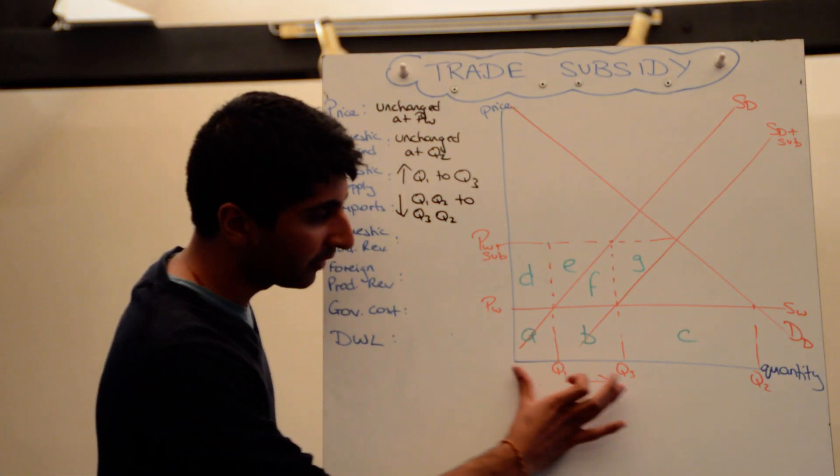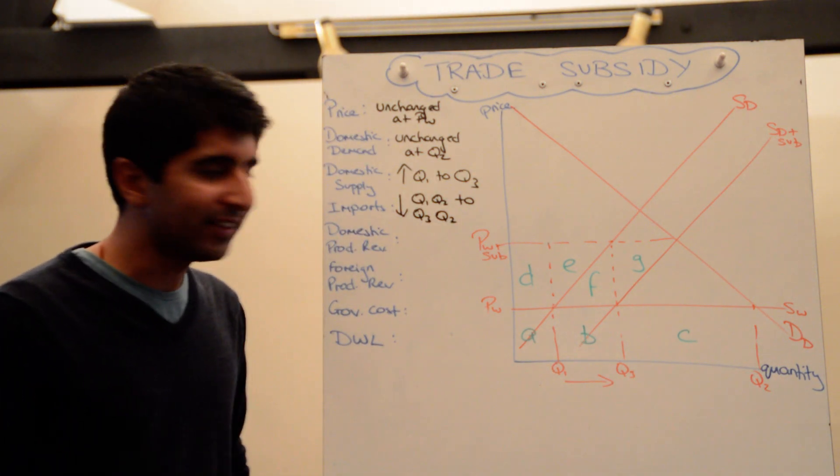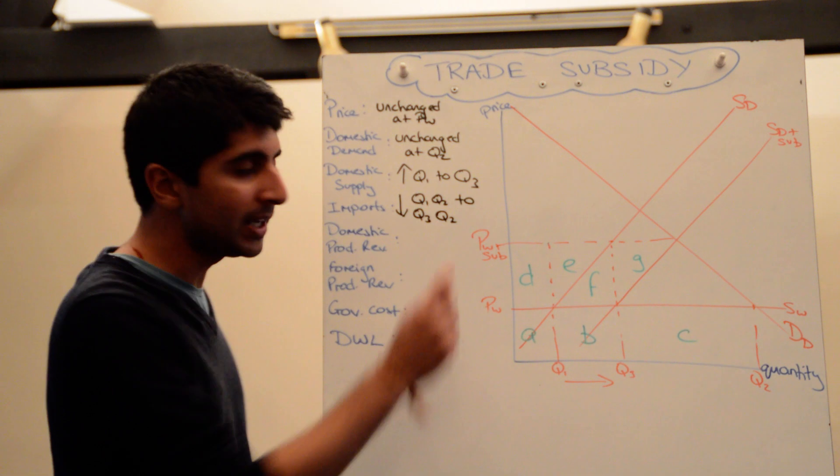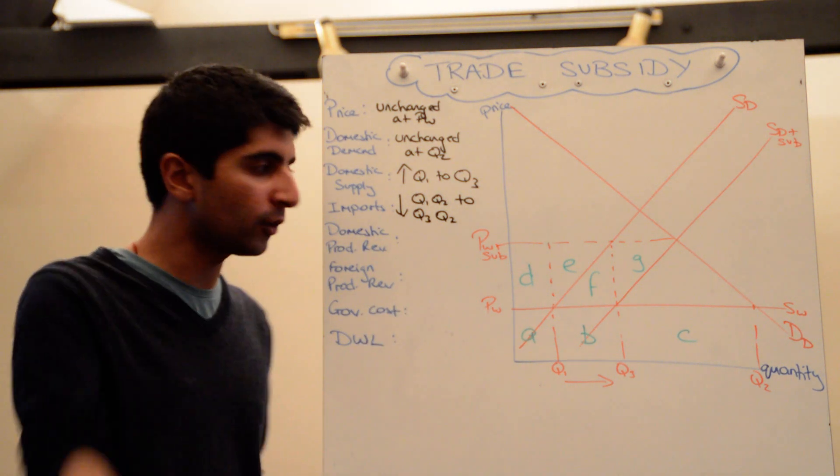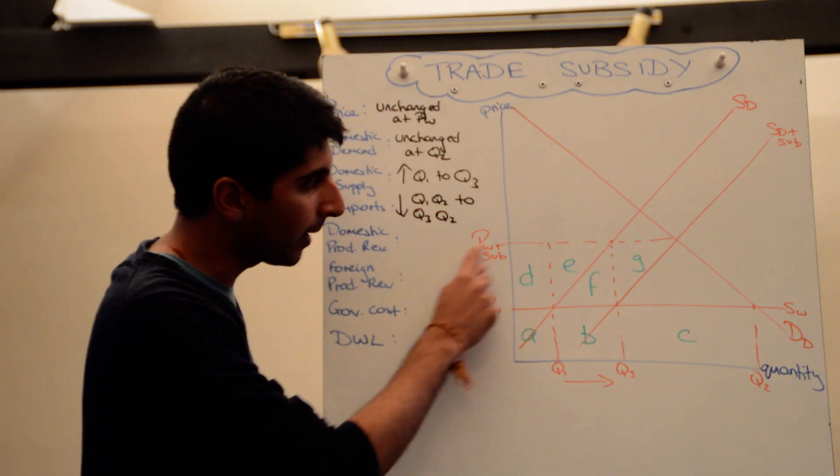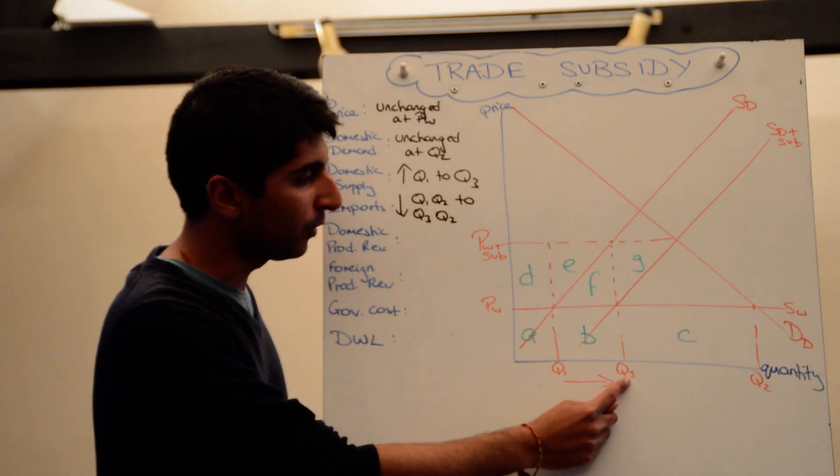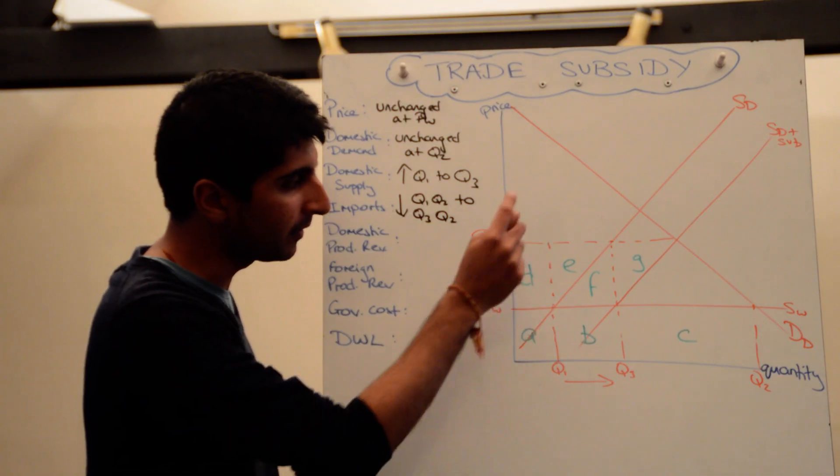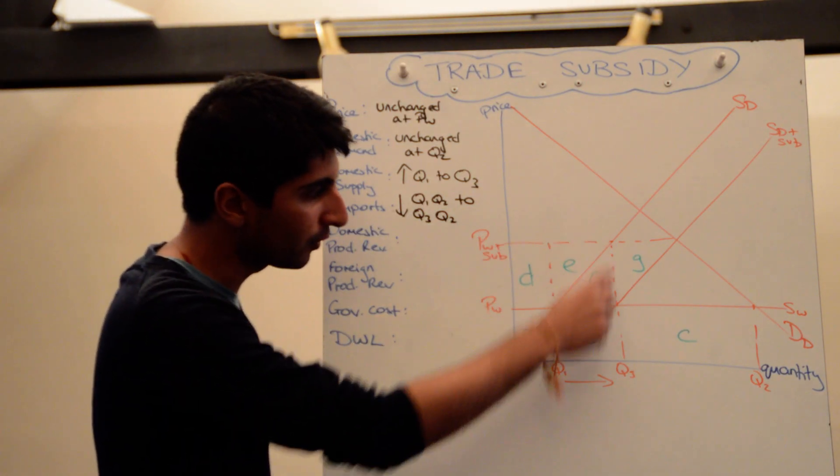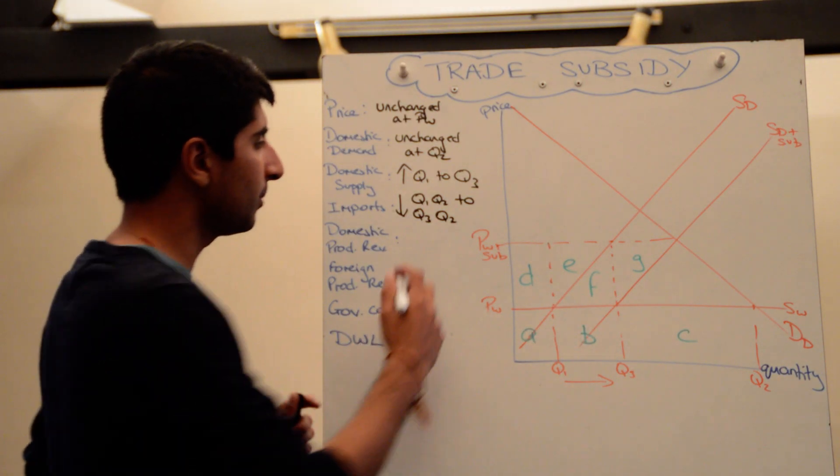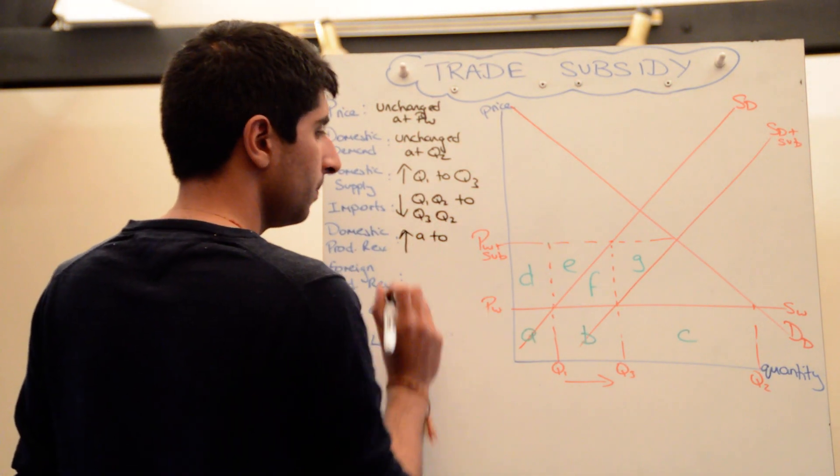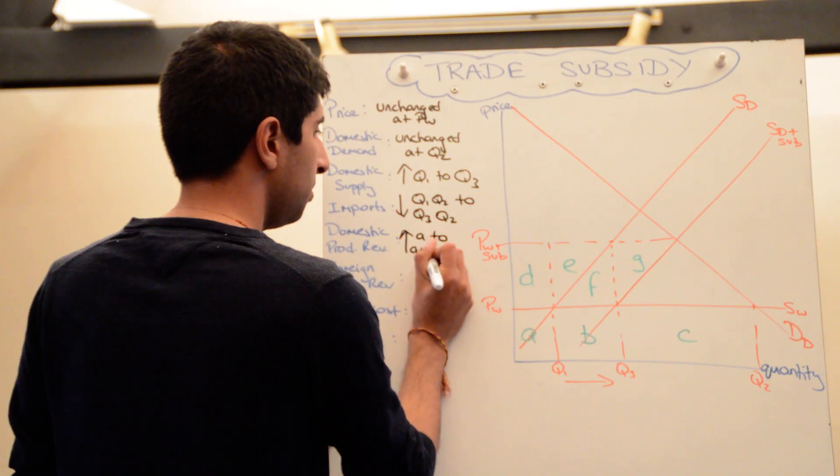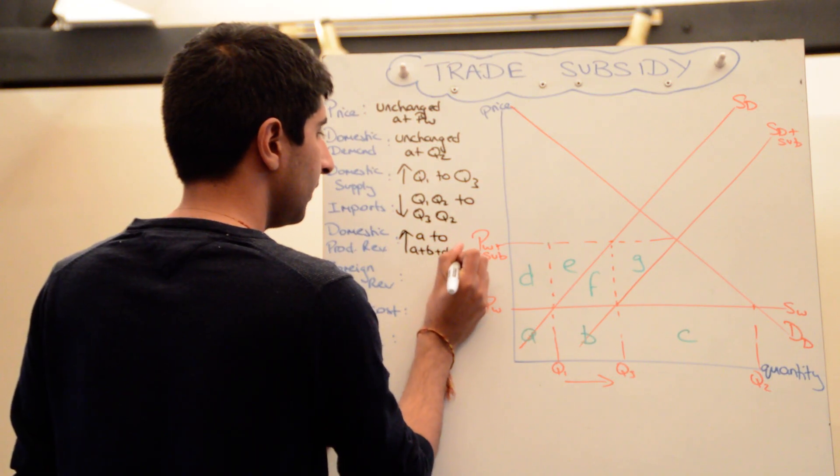Now they're selling more, they're selling all the way up to q3, and the effective price they're getting is pw plus sub. They're getting the price of the world with this subsidy on top, so pw plus sub times by all the units up to q3 gives you a plus b plus d plus e plus f, because it's a big box of revenue now. So domestic producer revenues increased from a to a plus b plus d plus e plus f - big increase, a lot of that is the subsidy.